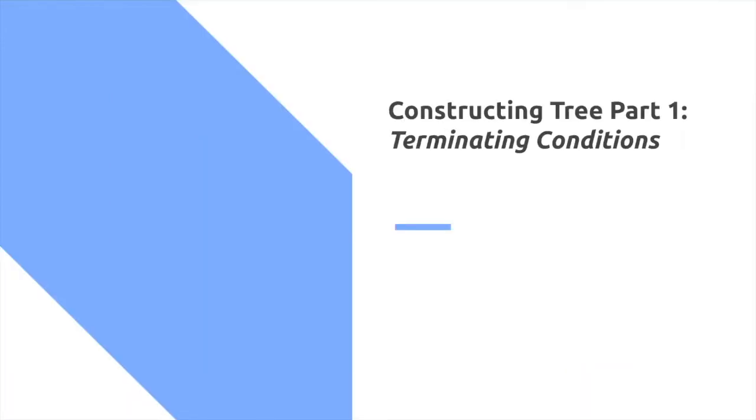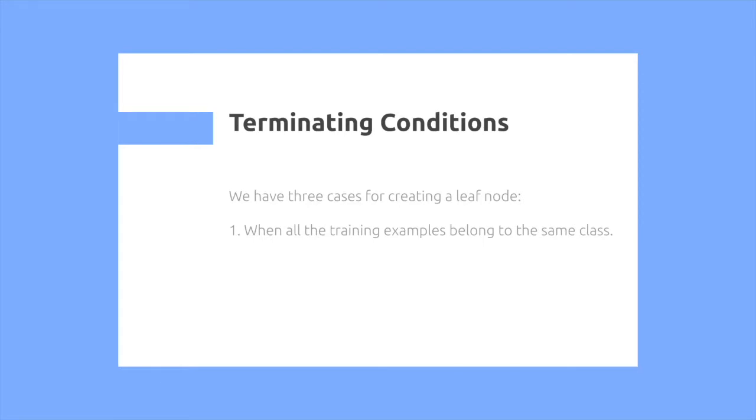So for the first part, we need to look at the terminating conditions. When we are trying to terminate a leaf to get a leaf node, there are three different cases we need to consider. First is when all the training examples belong to the same class. The second one is there are no more features to test. The third one is there are no more examples to test.